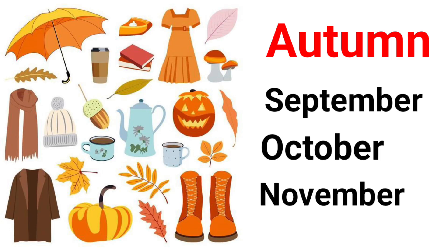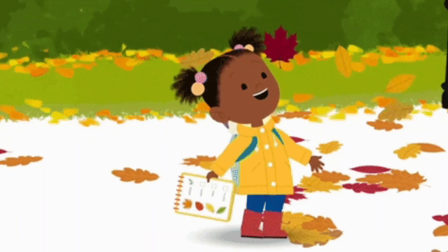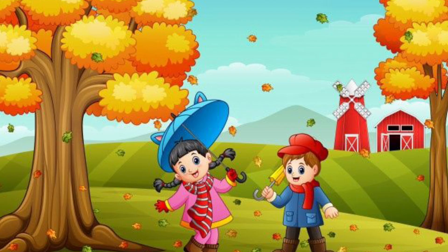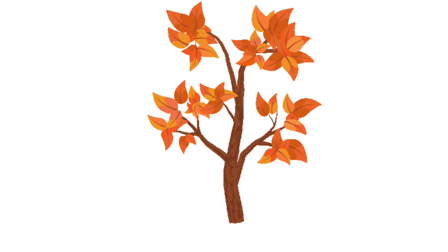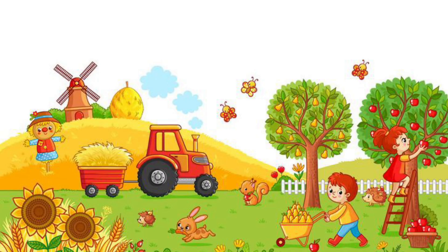Now we will see the Autumn season. Autumn season comes in the month of September, October, November. Autumn comes after Summer and before Winter. Autumn season acts as a transition between Summer and Winter. Autumn season is also called Fall season because leaves fall from the trees at the time of Autumn season. Autumn months are the time of the Harvest season.